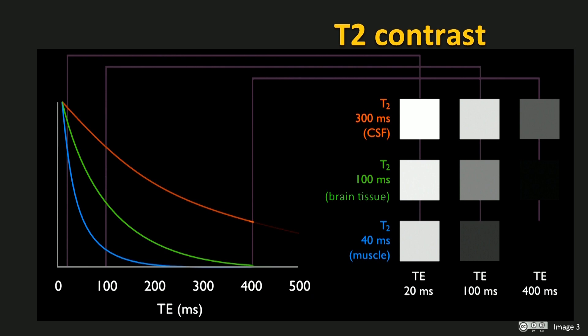You can see that at a TE of around 100 milliseconds, the relative intensities of the three tissues are quite different, but at very short and long TE times, the intensity differences or the contrast are not as pronounced. We can use this effect then to optimize the contrast between tissues in a so-called T2-weighted image by selecting the appropriate TE time.